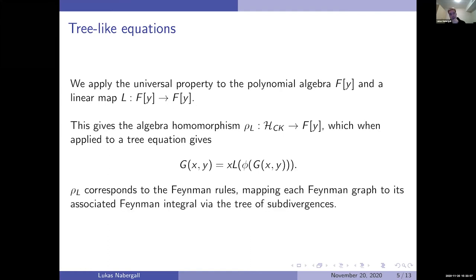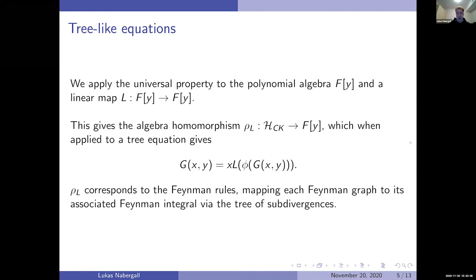One way to think about this is that the algebra homomorphism corresponds to the Feynman rules, mapping each Feynman graph to the associated Feynman integral via the tree of subdivergences. You can sometimes think of this as a kind of Dyson-Schwinger equation, or a generalization of Dyson-Schwinger equations.